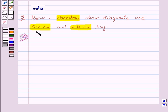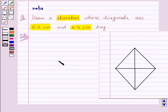Here, only two measurements are given, i.e. the two diagonals. But even then we can draw this figure with the help of its properties. So, let us draw the rough sketch of the rhombus which will help us in visualizing the figure.